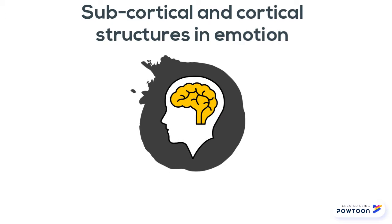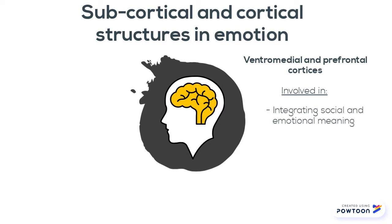Cortical structures include the ventromedial and prefrontal cortices. These are involved in integrating the social and emotional meaning of emotional stimuli.